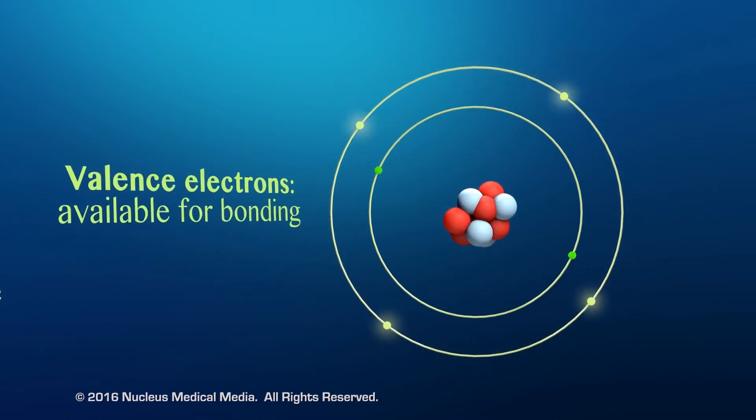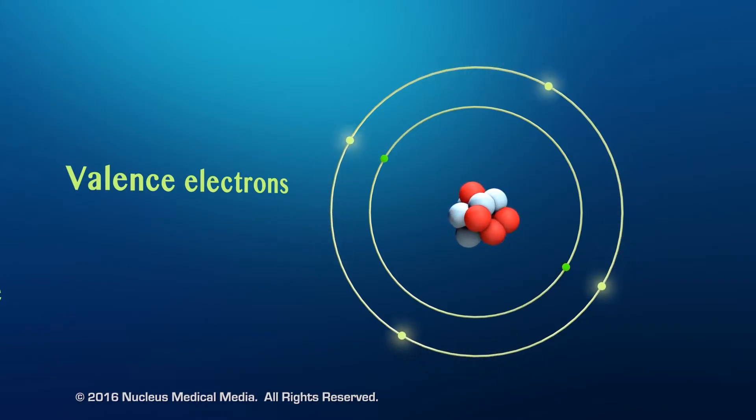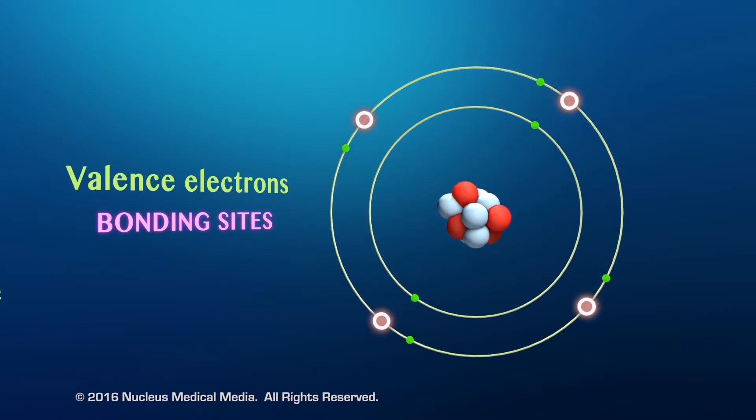Remember, valence electrons are those electrons available for bonding with other atoms. Accompanying these four electrons are four bonding sites or four places that carbon can form bonds with other carbon atoms or with atoms of other elements.